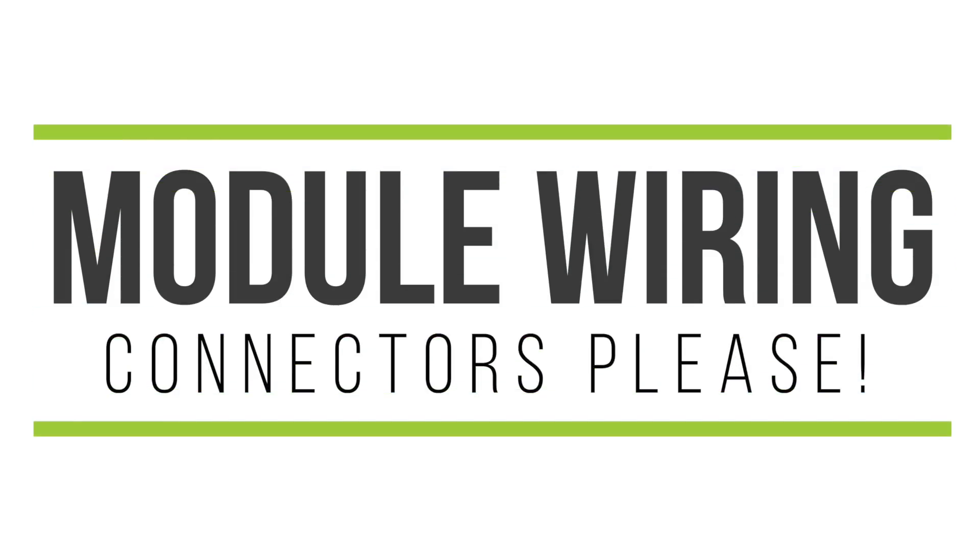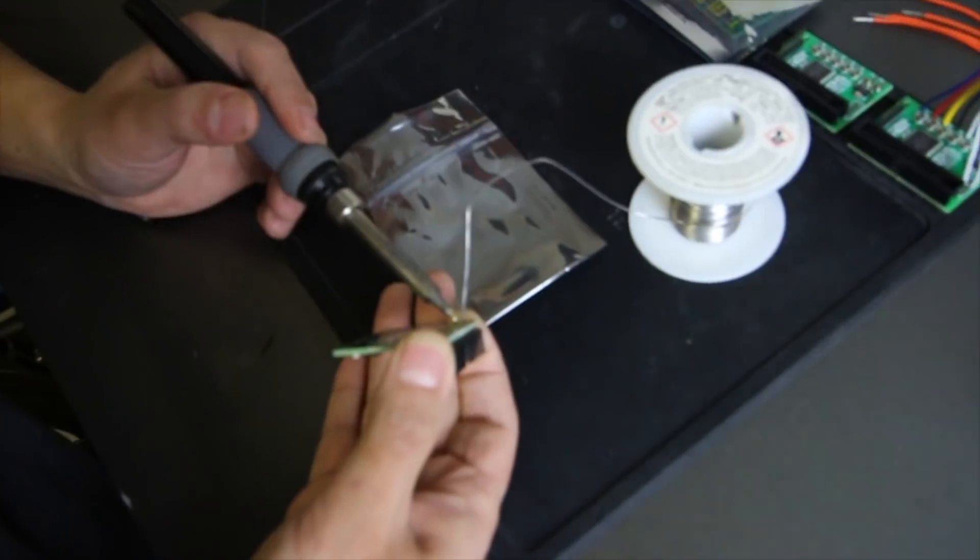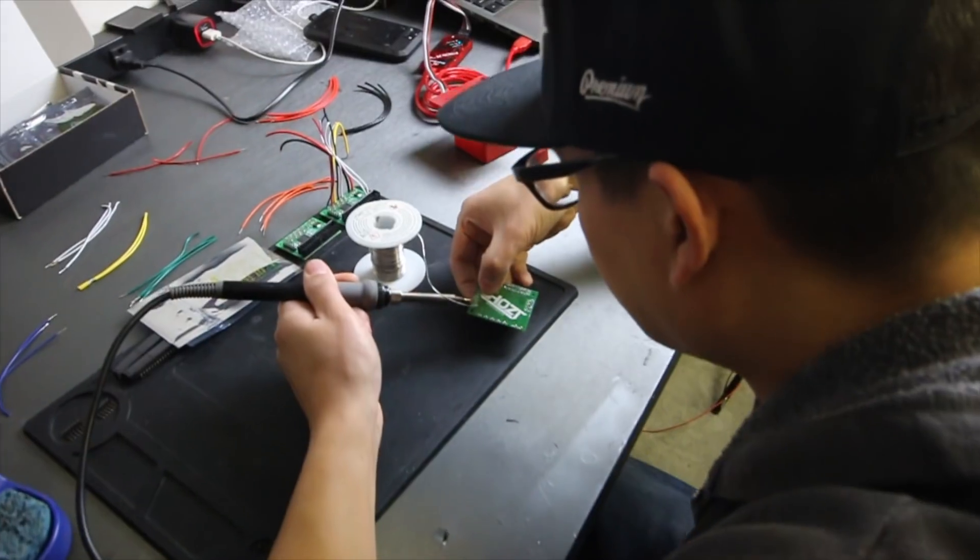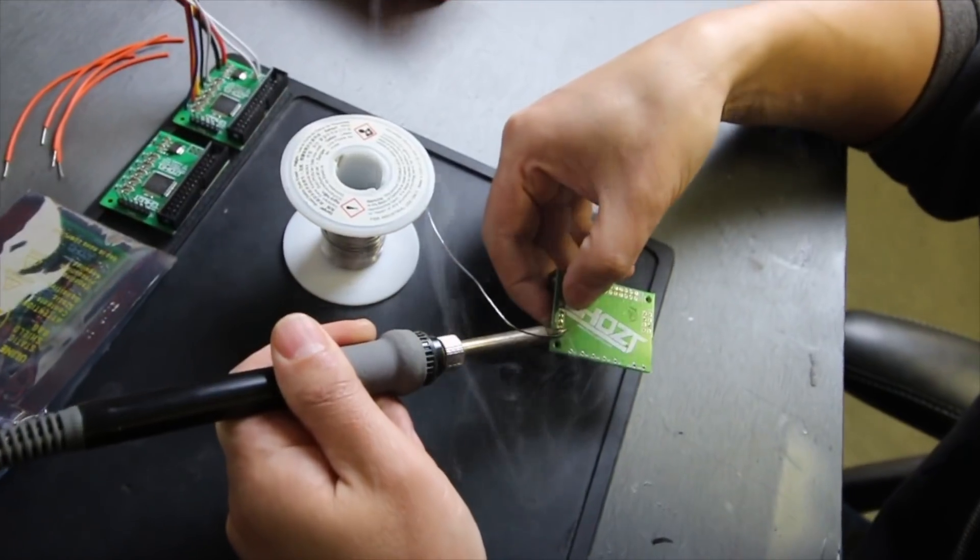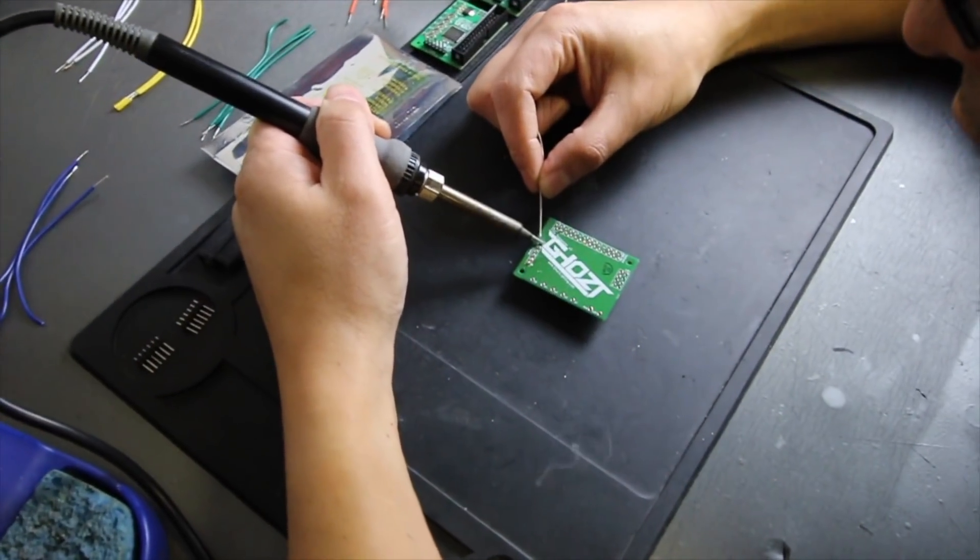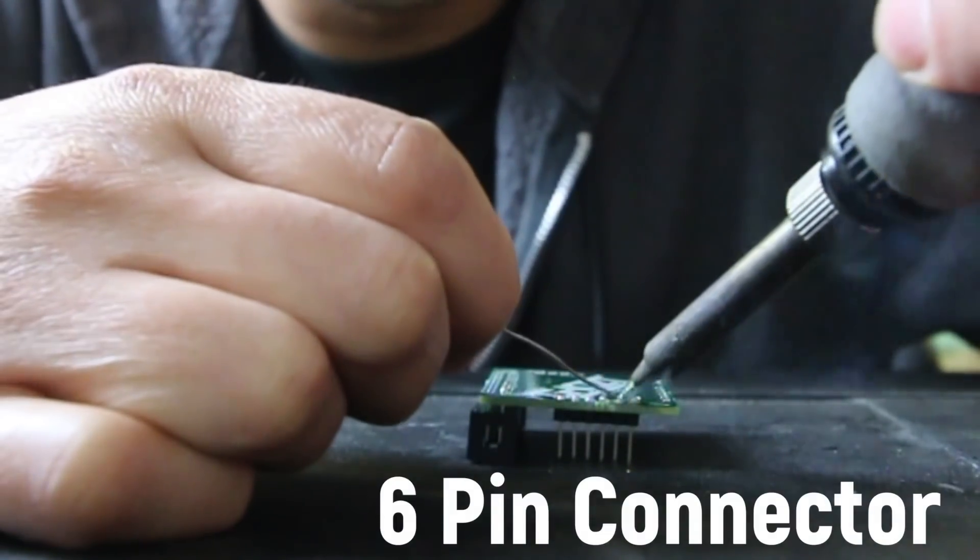Alright, module wiring is going to save so much time when it comes to actually hooking these things up, whether that means connecting them or disconnecting them, making little changes, whatever it might entail. All that we're doing right here is soldering on a couple different little connectors that have 28 wire connections to them.